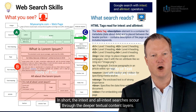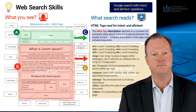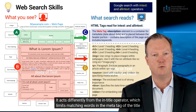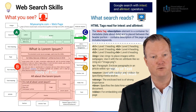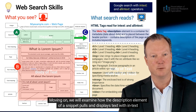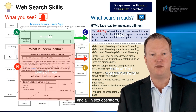the in-text and all-in-text searches scour through the deeper textual content layers. It acts differently from the in-title operator, which limits matching words in the meta tag of the title within the header area. Moving on, we will examine how the description element of a snippet pulls and displays text with in-text and all-in-text operators.